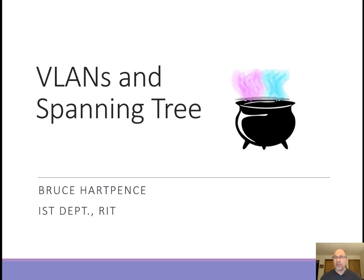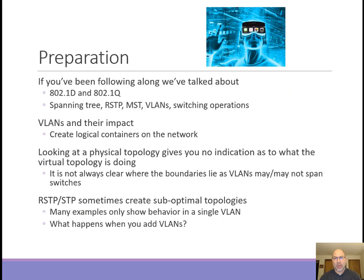We've talked about a lot of topics so far this week, but what happens if we stick them all in a cauldron and swirl them around together? Our two standards we've talked about so far — 802.1d and 802.1q — one followed the other and they introduced us to spanning tree, then rapid spanning tree. Then we added VLANs, multiple spanning tree, per-VLAN spanning tree, and how switches operate with changes in VLANs.